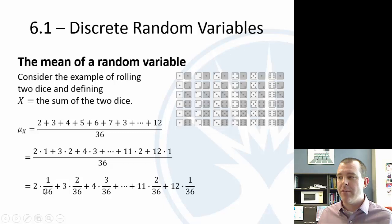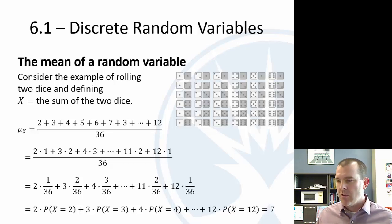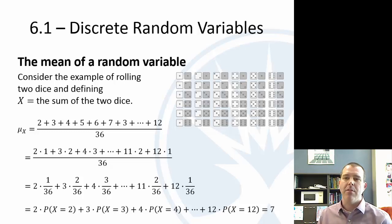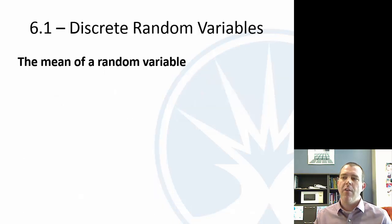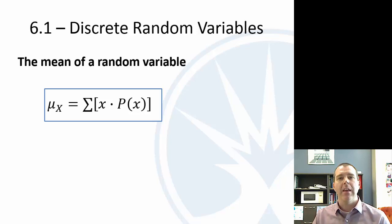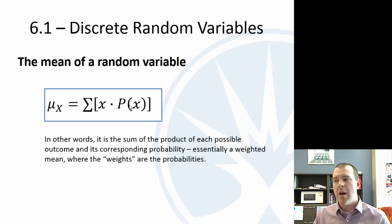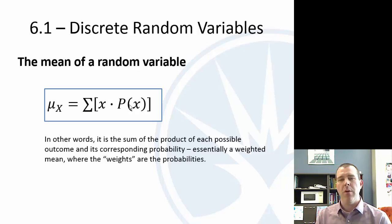So this is really a probability statement: it's 2 times the probability of a 2, plus 3 times the probability of a 3, plus 4 times the probability of a 4, and so on. If you do all those computations, you get 7 — on average we would expect a 7. Sometimes it's going to be less, sometimes more, but the average is going to be 7. So the mean of a random variable is kind of like a weighted mean where the weights are the probabilities.